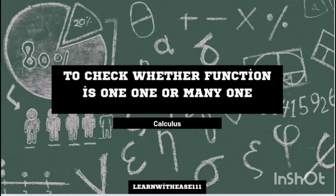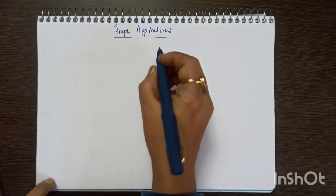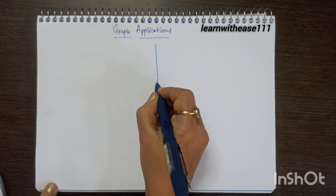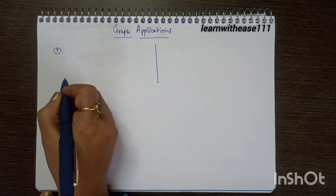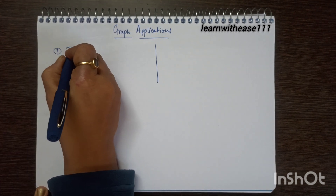To check whether a function is one-one or many-one, we have two kinds of approaches: one is graphical and the other is the derivative approach. We are studying graph applications here.